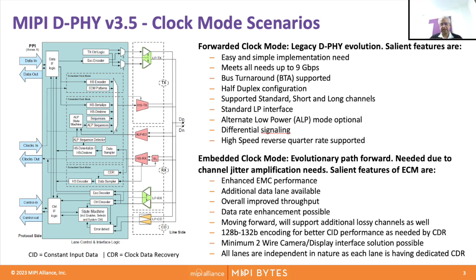Moving to the embedded clock mode, we started this from D-PHY version 3.5. The reason for moving to embedded clock mode is channel jitter amplification, which limits increasing data rates in the forwarded clock mode — with higher clock frequency, jitter gets amplified. To control jitter, you go to embedded clock mode. Embedded clock mode does not have a separate clock lane running; the clock is embedded in the data itself. The advantage is better EMC performance because there is no clock spur — it is all data, no clock. You can go to still higher data rates with no jitter amplification.